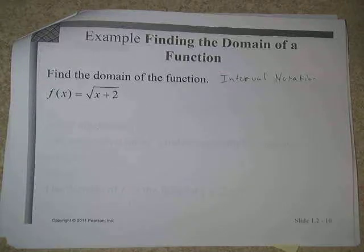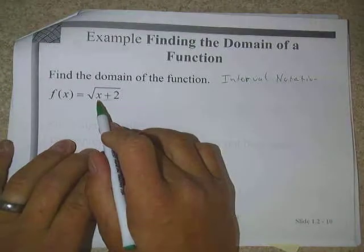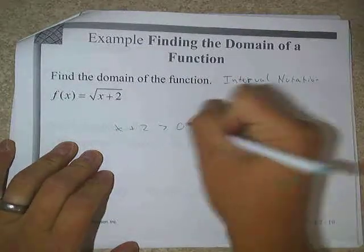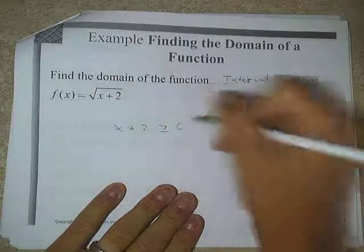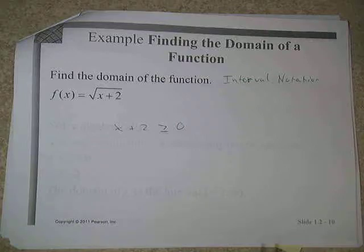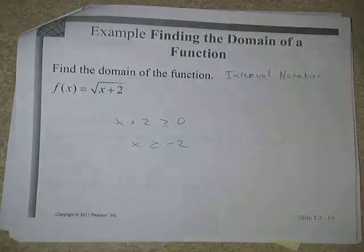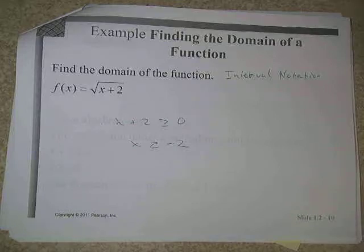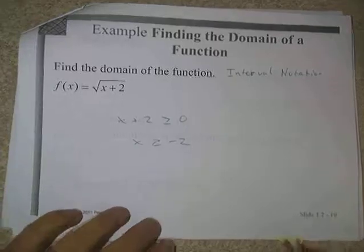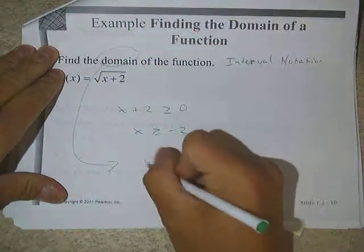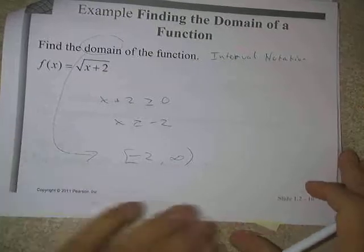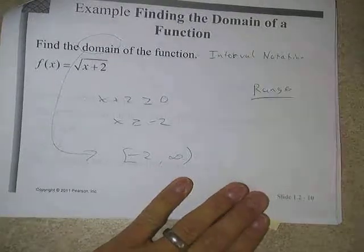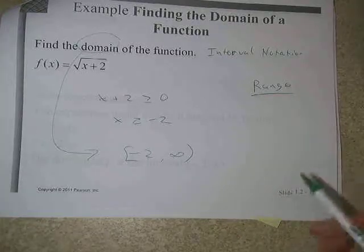The domain is what values of x give us real answers. To find it, decide what can't we put in. We need x plus 2 to be greater than or equal to 0 — square root of 0 is fine. Solving that gives x greater than or equal to negative 2. Anything less than negative 2 makes a negative under the radical, which is not okay. In interval notation, the domain is [-2, ∞).